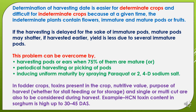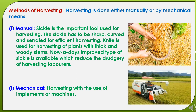In fodder crops, toxins present in the crop, nutritive value, purpose of harvest, and single or multi-cuts should also be considered during harvest. Harvesting is done either manually or by mechanical means. In case of manual harvesting, the sickle is the important tool used. The sickle has to be sharp, curved, and serrated for efficient harvesting. A knife is used for harvesting plants with thick and woody stems. Nowadays improved types of sickles are available which reduce the drudgery of harvesting laborers.